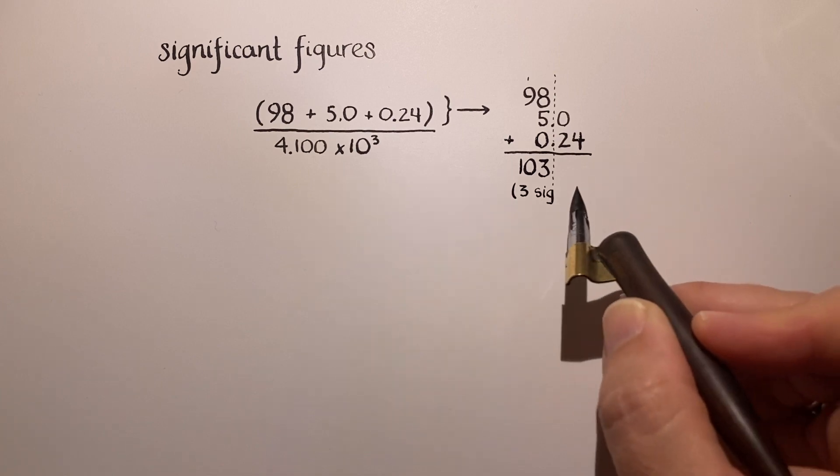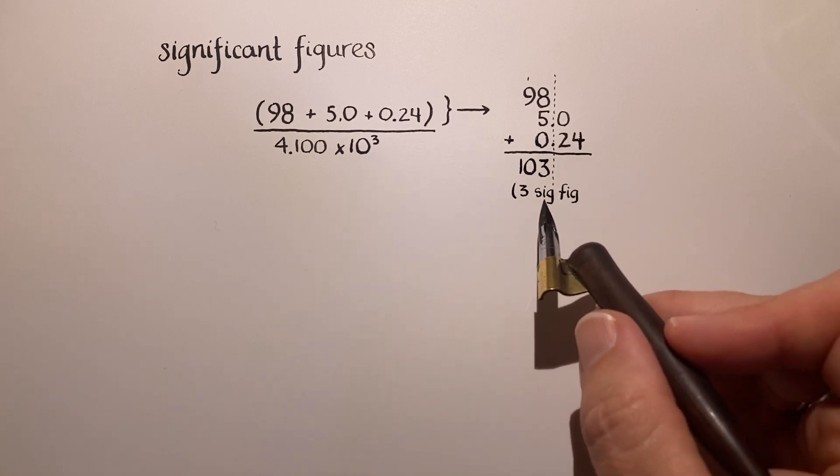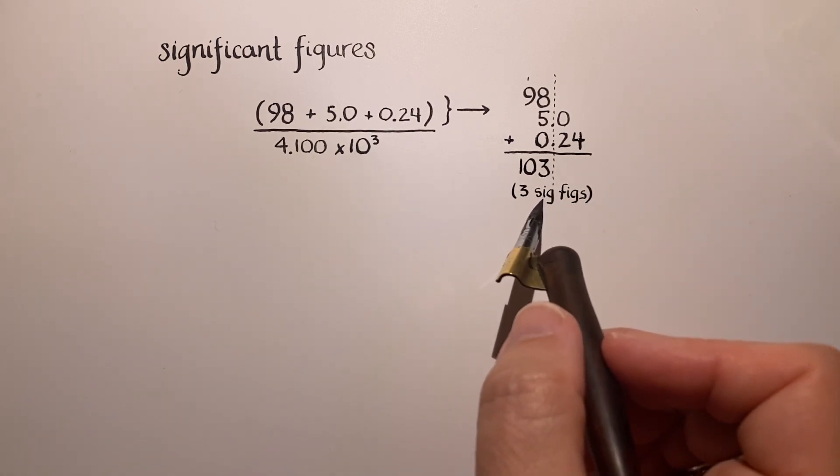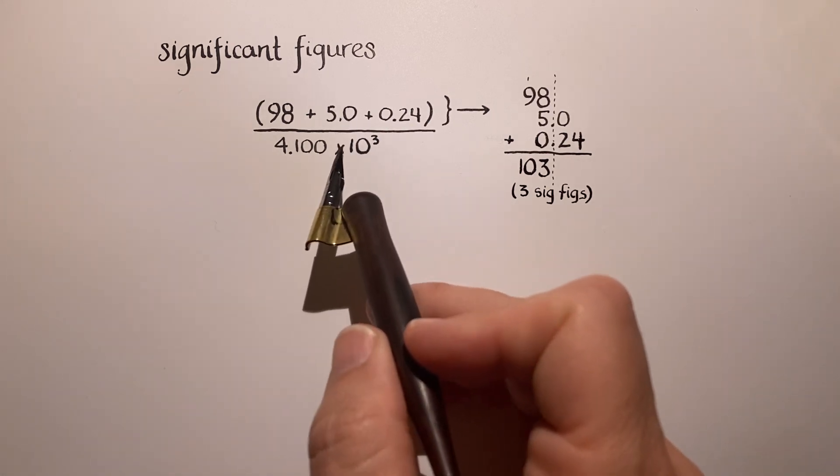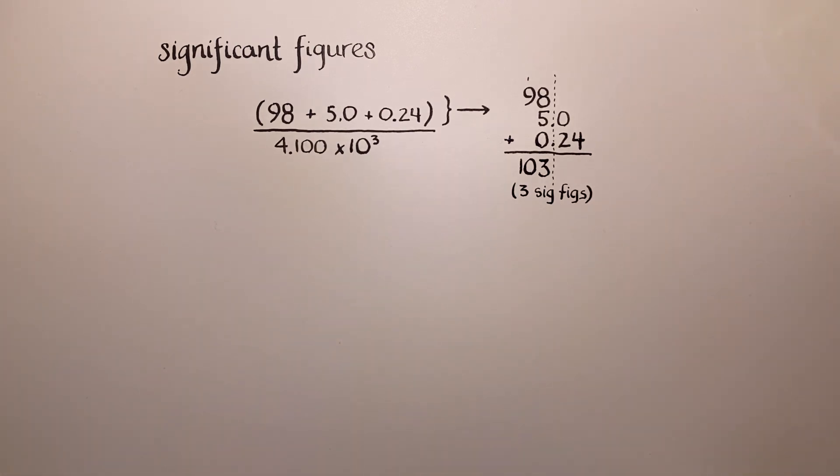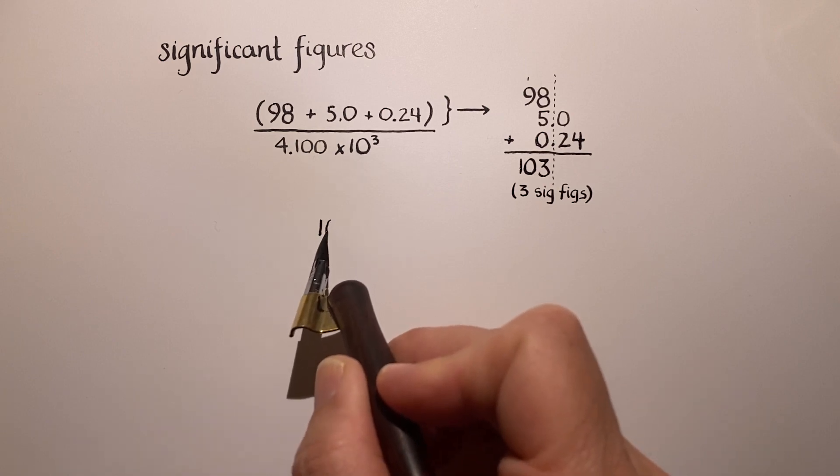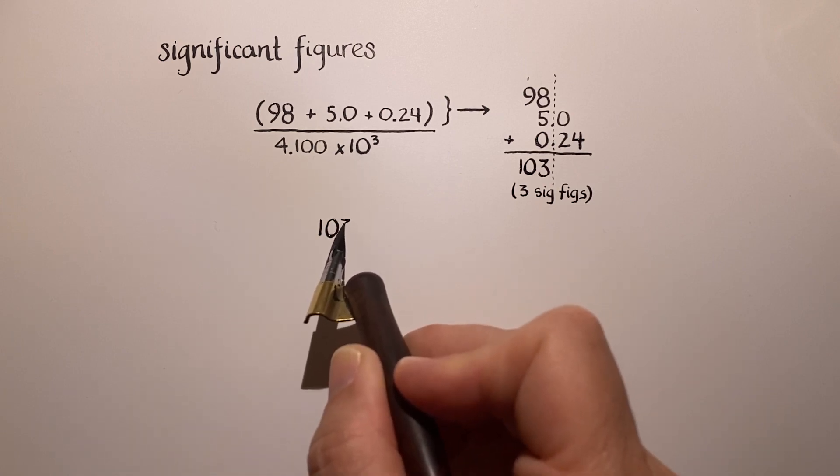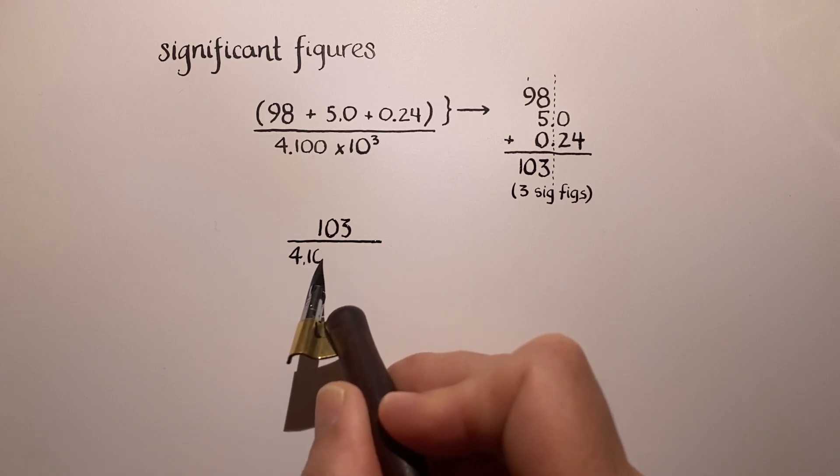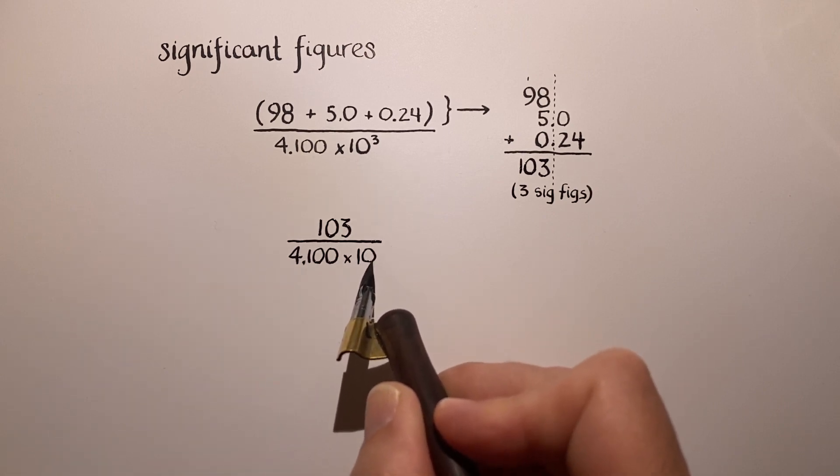In shorthand, we say sig figs a lot, because it's a lot easier and more fun to say than significant figures. Okay, so this is three sig figs. And now we are ready to carry out this division. We have determined what this equals with the correct number of significant figures. And so now we can go ahead and rewrite this mathematical division that we're carrying out. So there's our 103, and we're dividing it by 4.100 times 10 to the third.